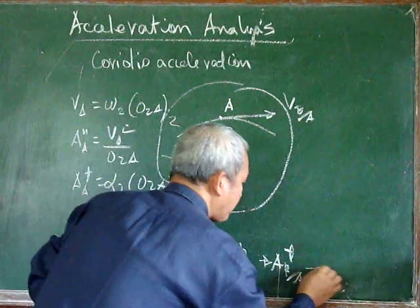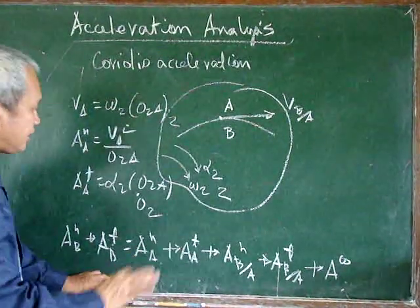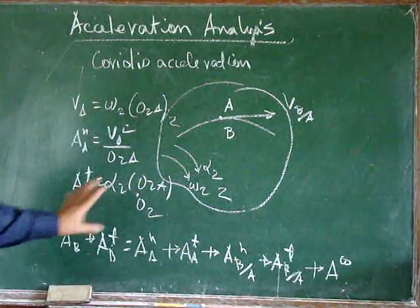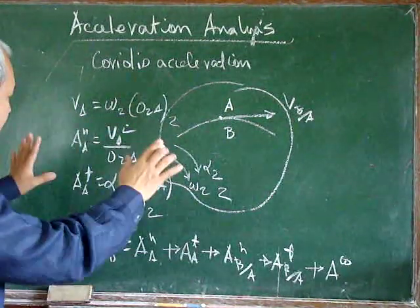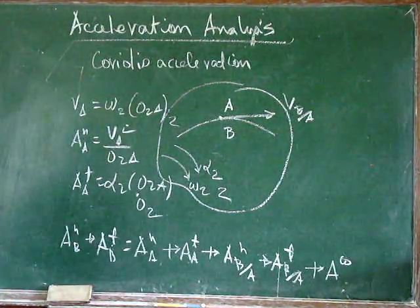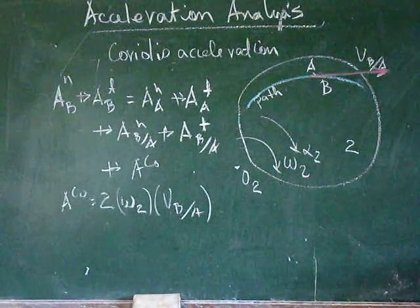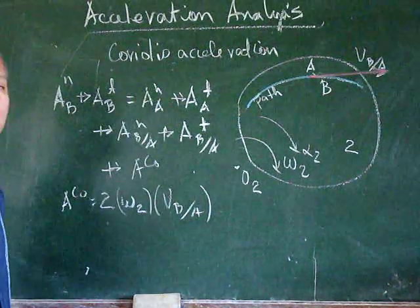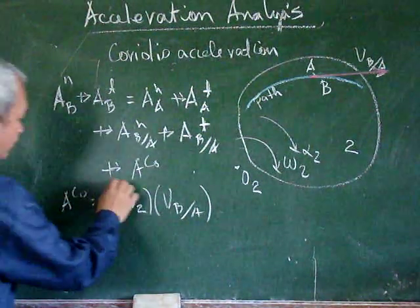There is also the Coriolis component of acceleration. After introducing the various components of acceleration including the Coriolis component, we will now concentrate only on the Coriolis component of acceleration. Most of the unknowns in problems we encounter will be the tangential acceleration of A, or the tangential acceleration of B with respect to A, or sometimes the tangential acceleration of B.